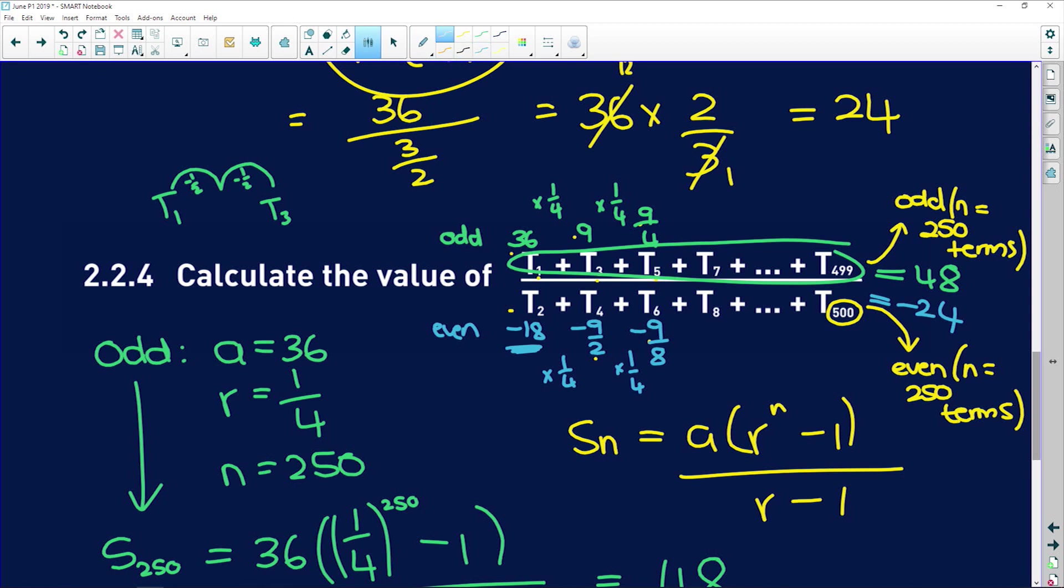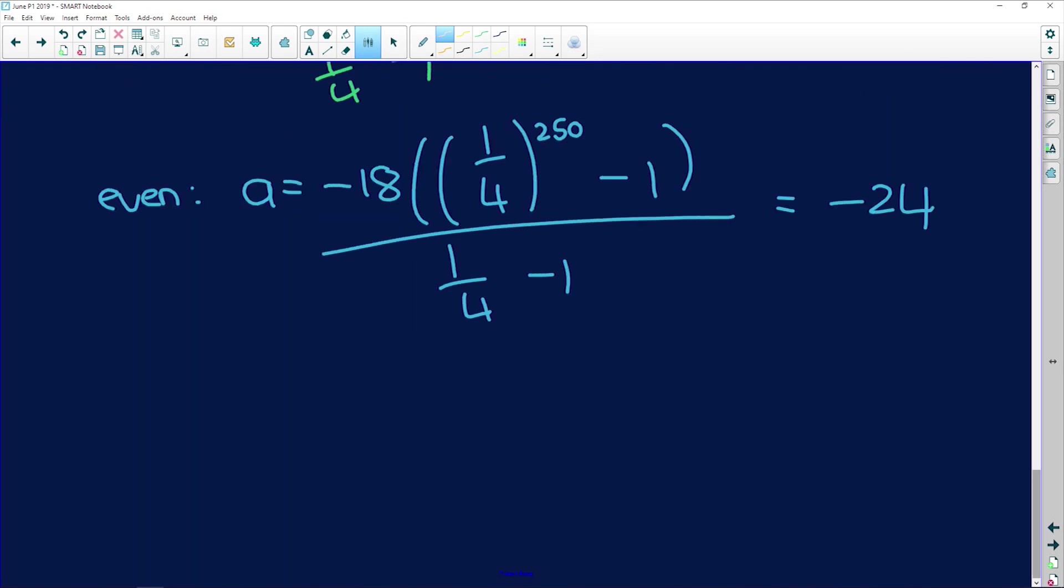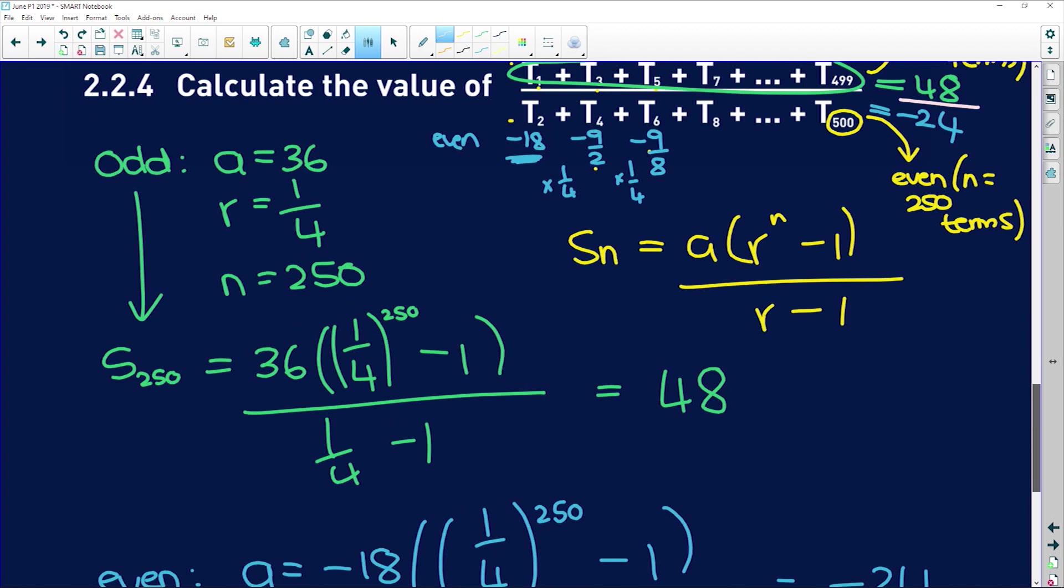So now, the sum that we're trying to find is simply the numerator over the denominator. So, term 1 plus term 3 plus term 5, etc., all over term 2 plus term 4 plus term 6, etc., is equal to 48 divided by negative 24, which gives us negative 2.